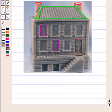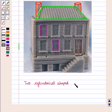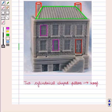We can also see two cylindrical shaped pillars on the roof. That is a three-dimensional figure.